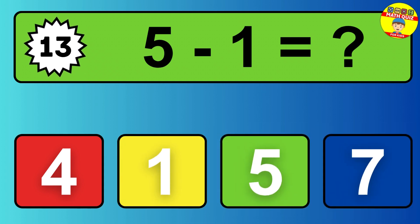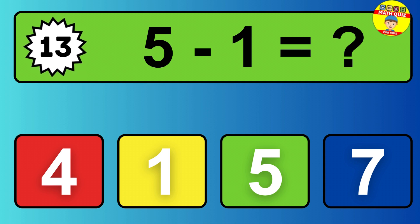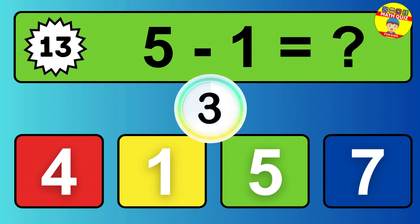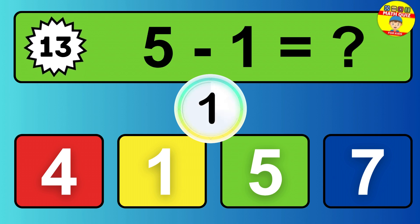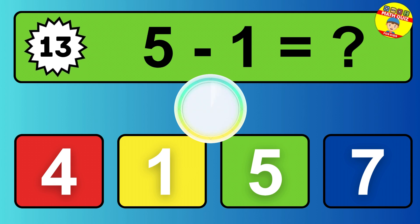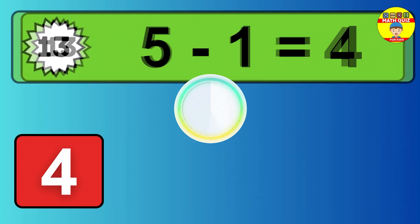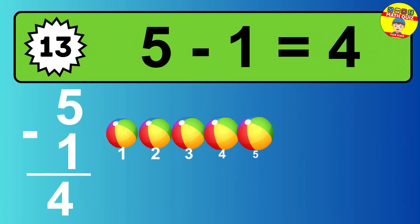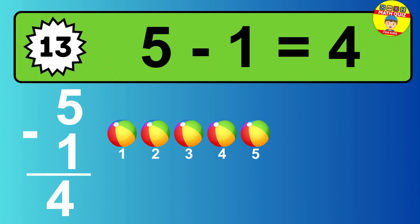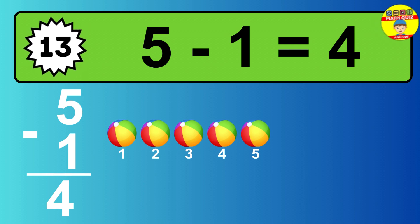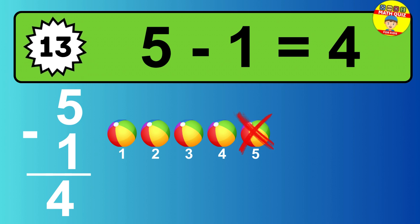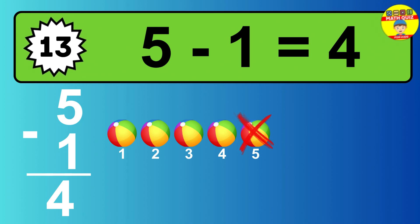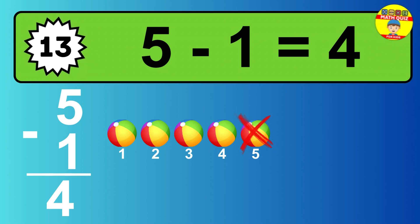Question thirteen. Five minus one equals what? So the answer is, five minus one is four. Let's count it. One, two, three, four.